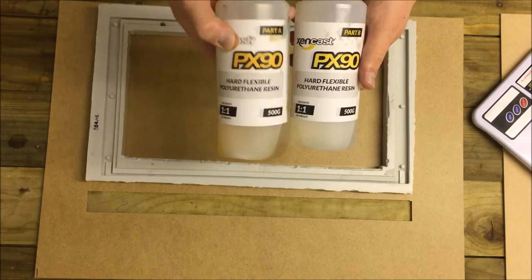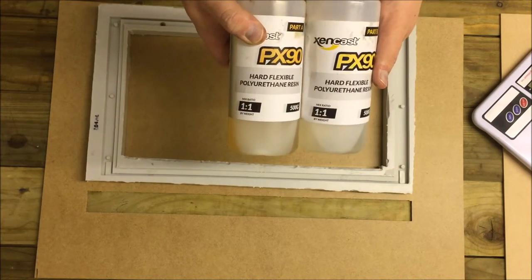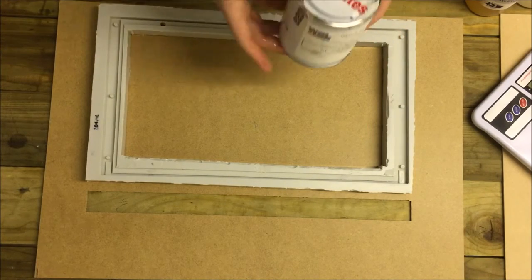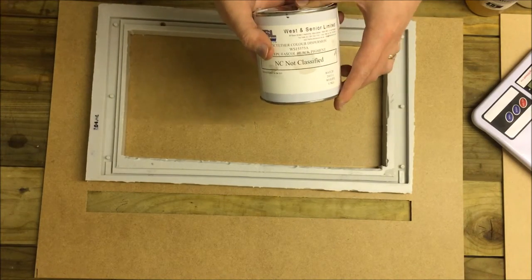It's a two part resin and it's PX90 hard flexible polyurethane resin. It seems to be really really good stuff. It's two part, part A and part B. It's a one to one mix ratio as well which makes it even easier. I also got again from Easy Composites some black pigment.